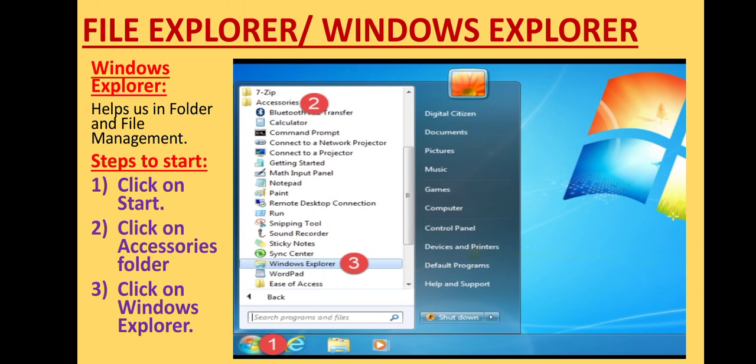File Explorer or Windows Explorer: it is an utility which helps us in managing our files and folders. Steps to start Windows Explorer: Click on Start menu as shown by number 1. Go to Accessories folder as shown as number 2. Click on Windows Explorer option as shown on number 3. The Windows Explorer will open.